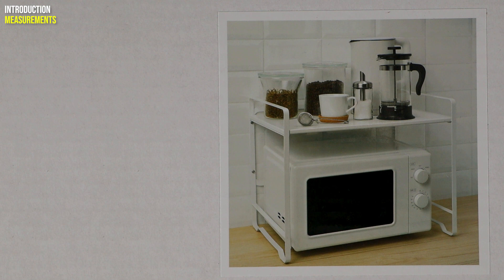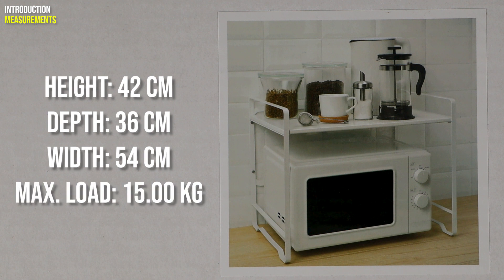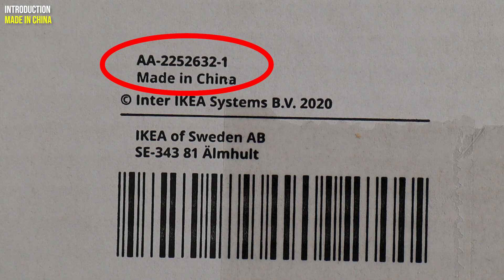The Avsteg's measurements are 42 by 36 by 54 centimeters and the maximum load on the top shelf is 15 kilos. This is IKEA's product number. IKEA is a Swedish company but this product comes from China.